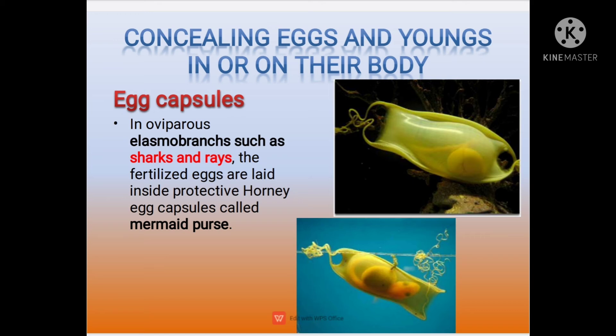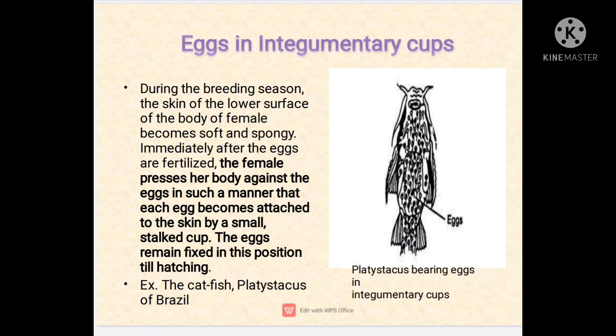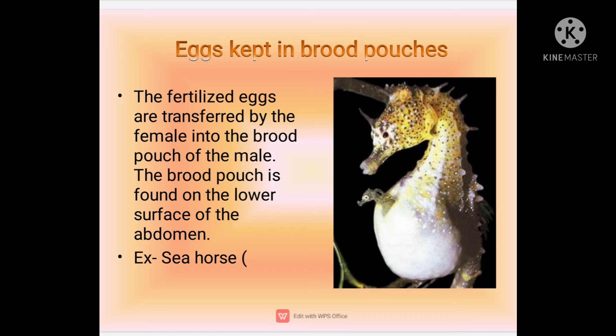The next method is eggs in the integumentary cup. In this method fishes keep their young ones on their bodies. During the breeding season the skin of the lower surface of the fish becomes very soft and spongy, and immediately after the eggs are fertilized the female presses her body against the eggs so that each egg becomes attached to the skin by a small stalked cup. The eggs remain fixed in this position until they are hatched. This is shown by catfish.